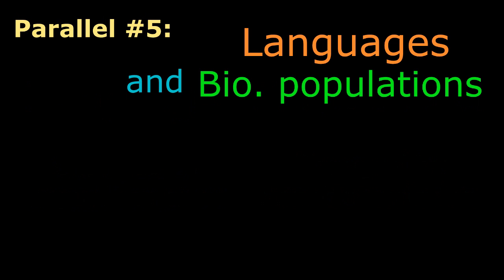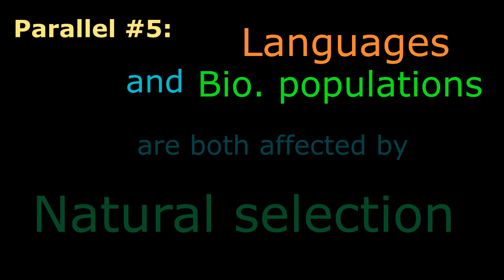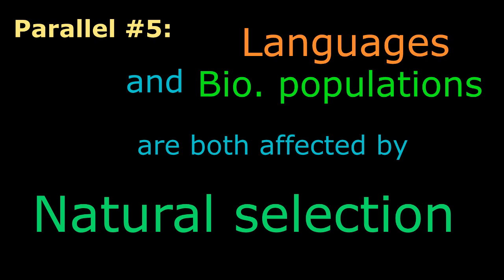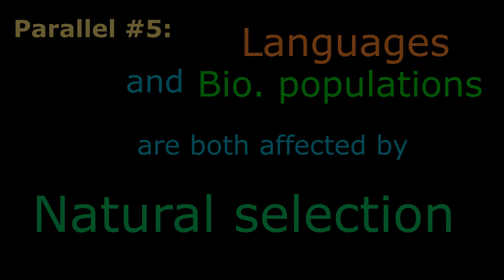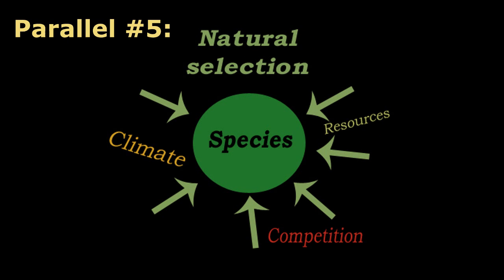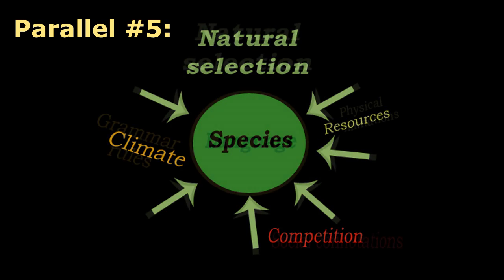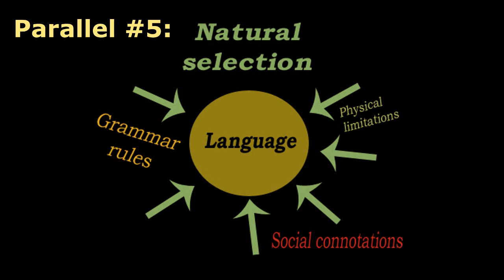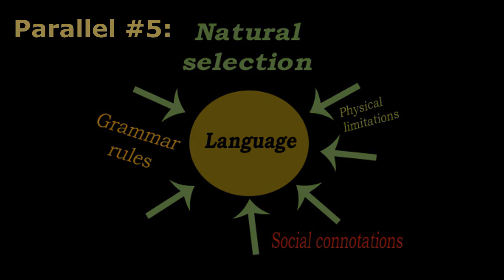However, since both biological species and languages are not drastically changing every day or every generation, we can notice that there's a form of natural selection keeping these changes in check. Just as the surrounding creatures and climate keep a species' gene pool from changing in every which way, grammar rules and social connotations for words tend to keep languages from easily breaking off into infinitely different directions.